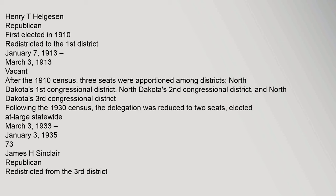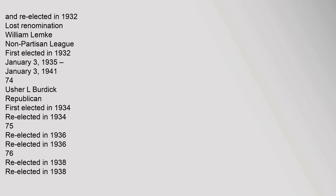Following the 1930 census, the delegation was reduced to two seats elected at-large statewide. From March 3, 1933 to January 3, 1935 (73rd Congress): James H. Sinclair, Republican, redistricted from the 3rd District, re-elected in 1932, lost renomination. William Lemke, Nonpartisan League, first elected in 1932. From January 3, 1935 to January 3, 1941 (74th–76th Congresses): Usher L. Burdick, Republican, first elected in 1934, re-elected in 1934, 1936, and 1938, retired to run for Senate.